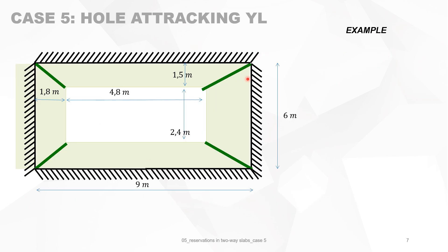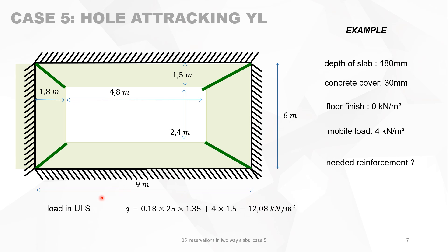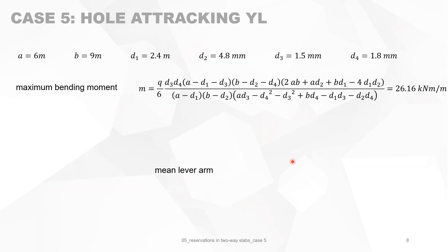Now let's work through an example. You have a slab situated 1.5 meters from the top and 1.8 meters from the sides, with a hole of 4.8 by 2.4 meters. The slab depth is 18 centimeters, concrete cover 30 millimeters, no floor finish, and a mobile load of 4 kN/m². We calculate the load in the ultimate limit state: 1.35 times the dead load plus 1.5 times the mobile load gives 12.09 kN/m². Using the formula, the maximum bending moment is 26.16 kN·m/m.